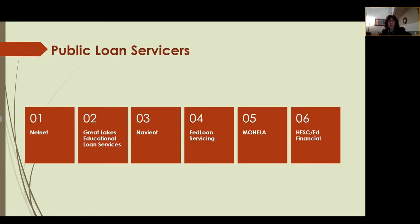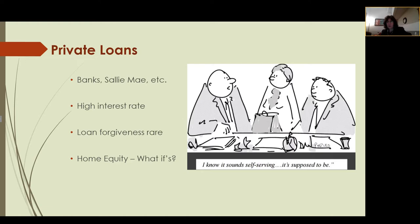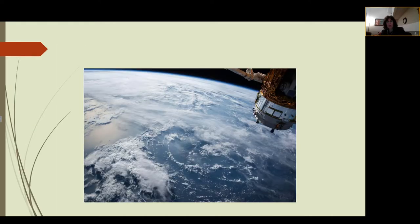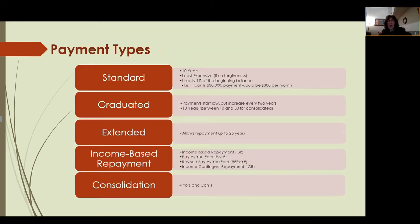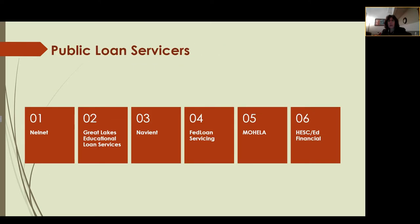The ICR — Income Contingent Repayment — is the only income-based repayment program available for PLUS loans. So if you are a parent taking out loans for your children and you qualify for income-based repayment or public service loan forgiveness, ICR is the only one eligible for that. I just want to make sure people are aware of that.